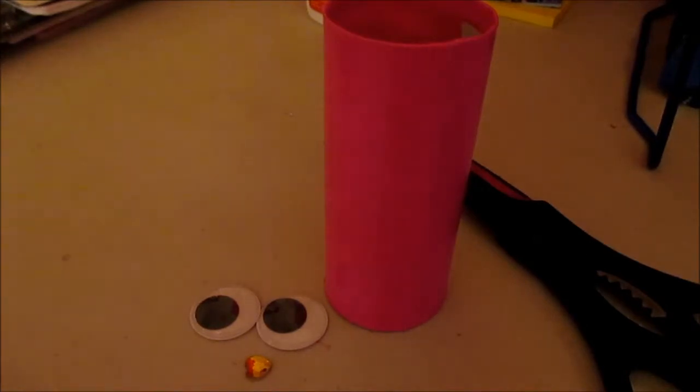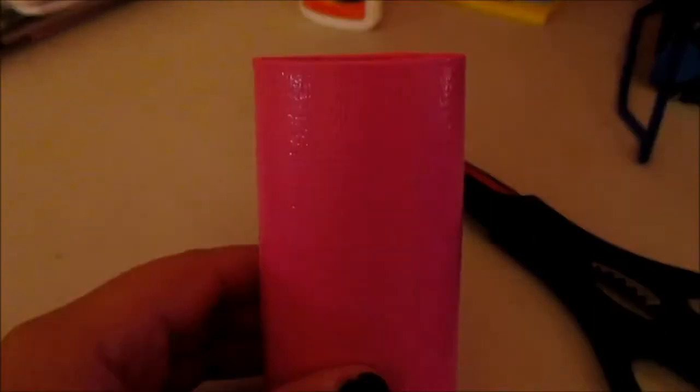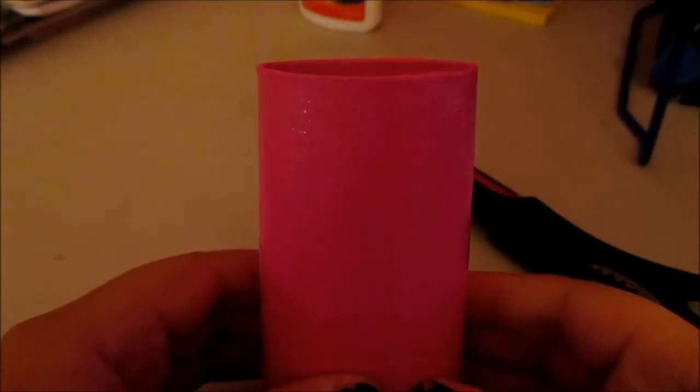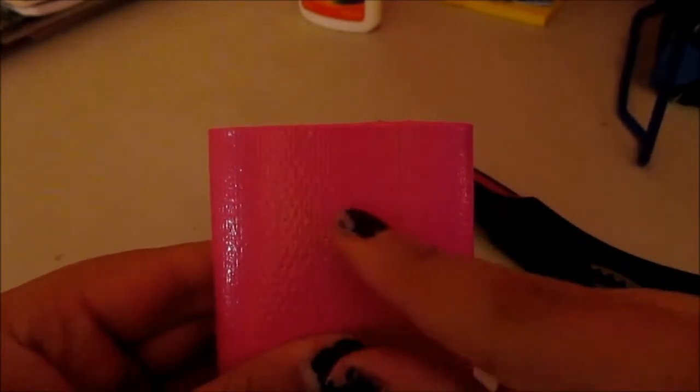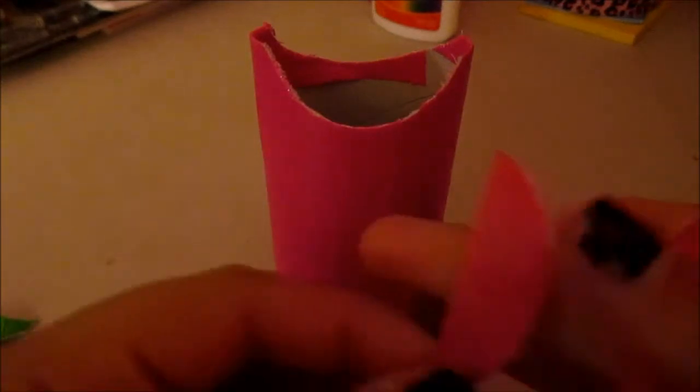The first thing you do is fold your toilet paper tube, and then on the top you cut off a piece like this. When you cut that part off, you should actually keep the parts that you took off because you're going to need them for the wings.